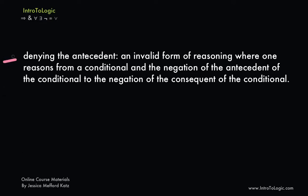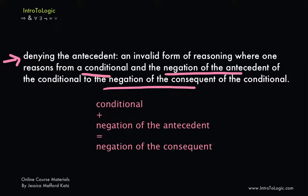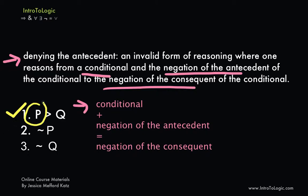Denying the antecedent is an invalid form of reasoning where one reasons from a conditional and the negation of the antecedent of the conditional to the negation of the consequent of the conditional. Here's the formula in symbolic form: premise 1 is a conditional — if p then q — premise 2 is the negation of the antecedent, not p, and we try to derive the negation of the consequent, which is not q.